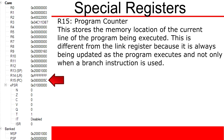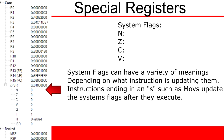R15, the program counter, works with R14, the link register. Whereas R14 holds your place in a previous function, R15 indicates the current memory address of the instruction you are executing. For example, if you were to leave your main program and go execute some subfunction, R14 would hold your place in the main function, whereas R15 would indicate your place in the subroutine.